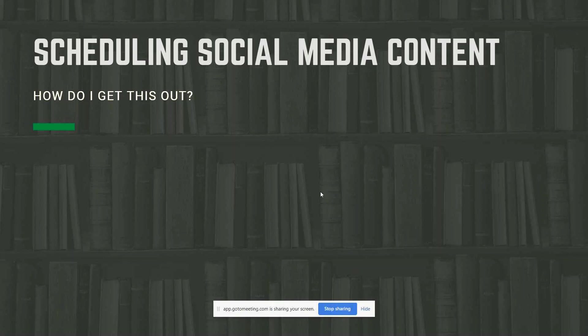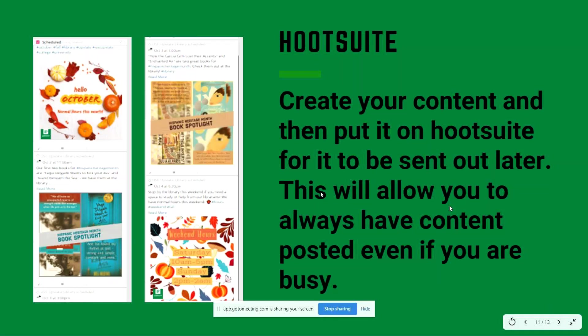What I use is HootSuite — you can post on many platforms at one time. You upload your graphic, select the accounts, type your caption, and decide your date and time. I'm still learning about what time is best to post for my library so I just play around. You can see one post I did at 11 a.m., one at 3 p.m., one at 6:30 p.m. — you can just decide what you want to do. It's a really great tool.